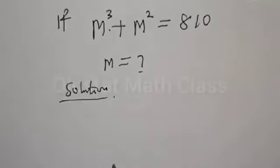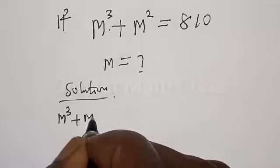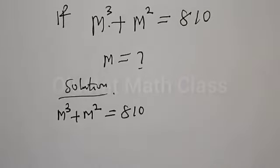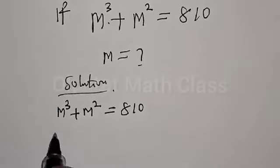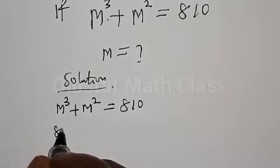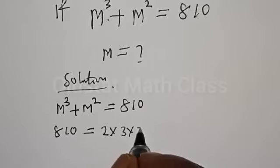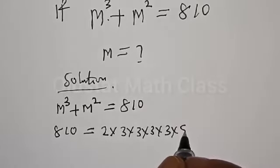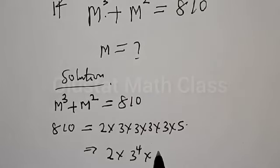Solution. We have M³ plus M² is equal to 810. We want to express 810 in the form of M³ plus M². This implies that 810 is equal to 2 multiplied by 3 multiplied by 3 multiplied by 3 multiplied by 3 multiplied by 5.